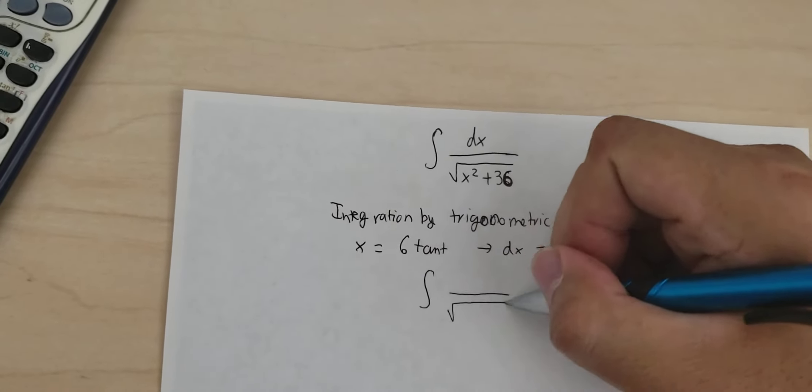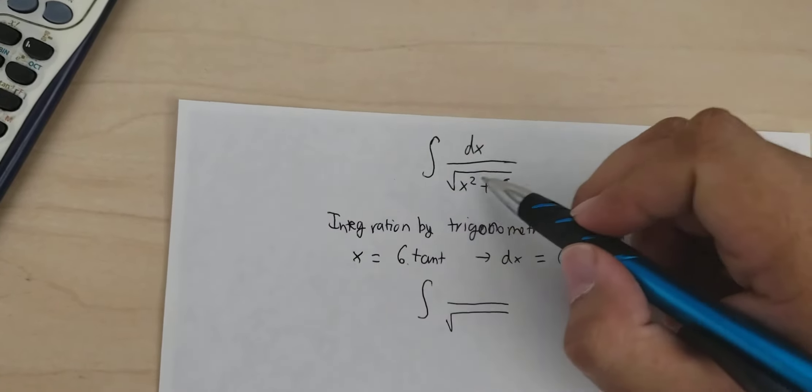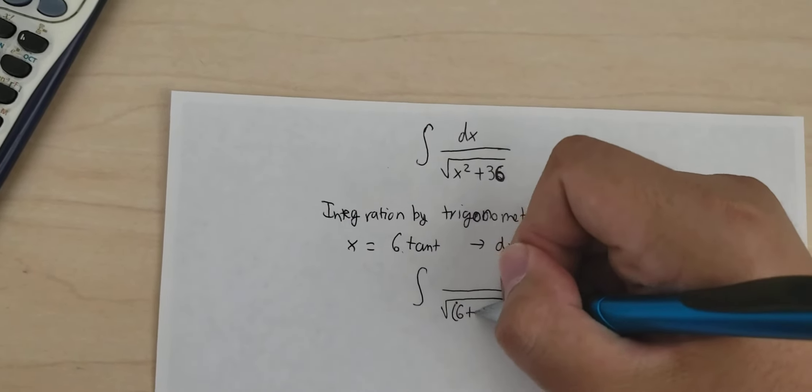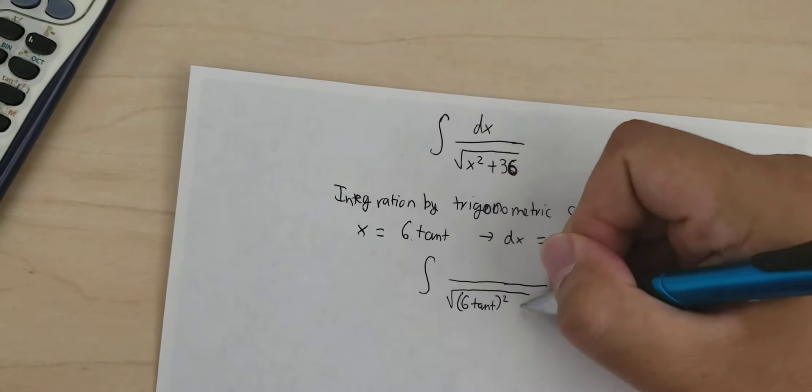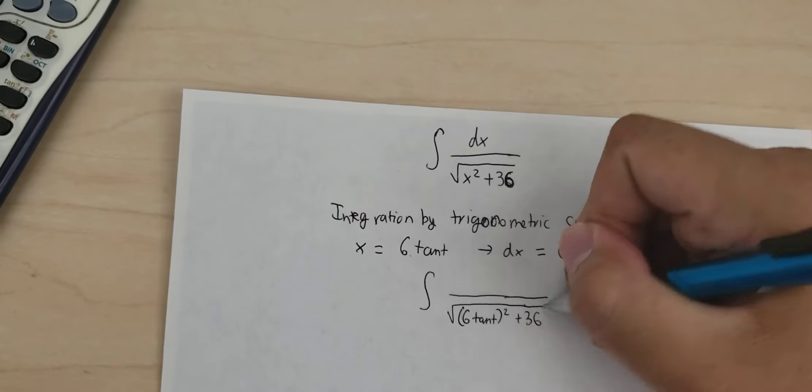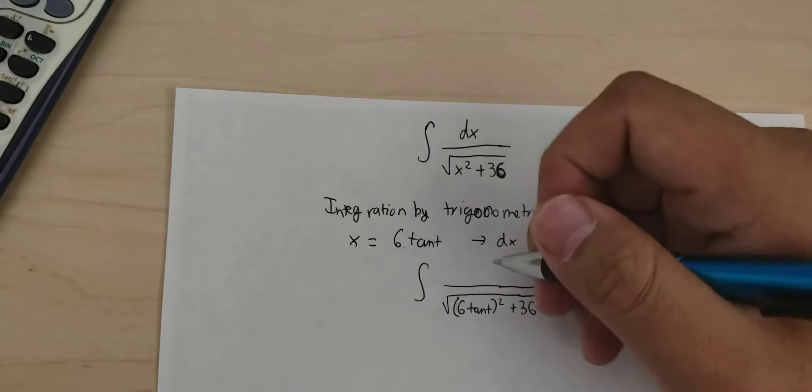Next, we put this into the integral. So you get 6 tan t, everything squared, plus 36. We change dx for this expression.